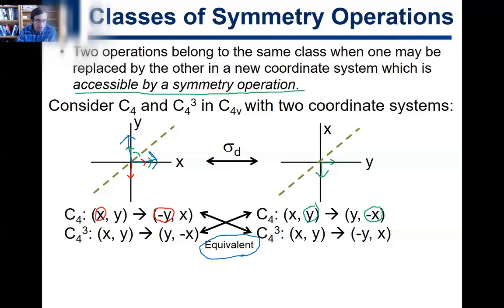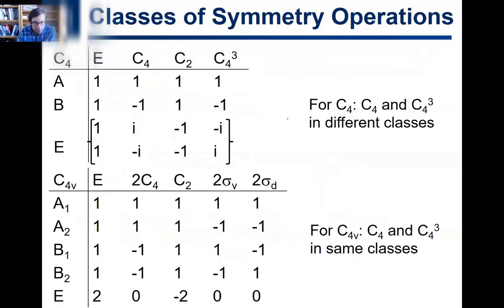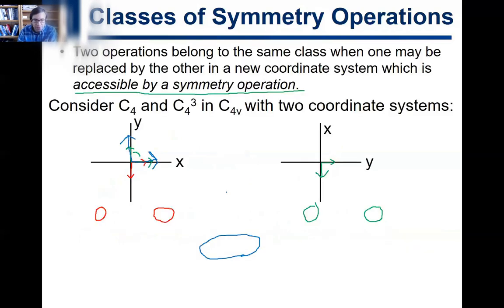The sigma-d allows us to interconvert between the two coordinate systems, showing that the two operations are equivalent. This means that in C4v, the C4 operation and C4³ are in the same class — that's why there's a '2' in front of that entry in the character table, indicating the class contains both the 90-degree and the 270-degree rotations.